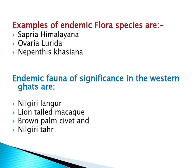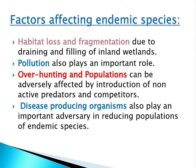Endemic fauna found in the Western Ghats includes the Nilgiri langur, lion-tailed macaque, brown palm civet, and Nilgiri thar. Factors affecting endemic species include habitat loss and fragmentation due to draining and filling of inland wetlands, and pollution, which plays an important role. Overhunting, population explosion, and introduction of non-native predators and competitors also adversely impact endemic species. Disease-producing organisms also play an important role in reducing the population of endemic species.